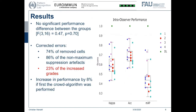Quite remarkably, we saw no significant difference between the groups — they performed equally. We have some correction errors that were artificially induced, and we found that 74% of the removed cells were reintroduced by participants, 86% of the non-maximum suppression artifacts were corrected, but only 33% of the increased grades — essentially the classification errors — were corrected. We also measured inter-observer performance to assess how consistently participants reproduced results across the two modes.